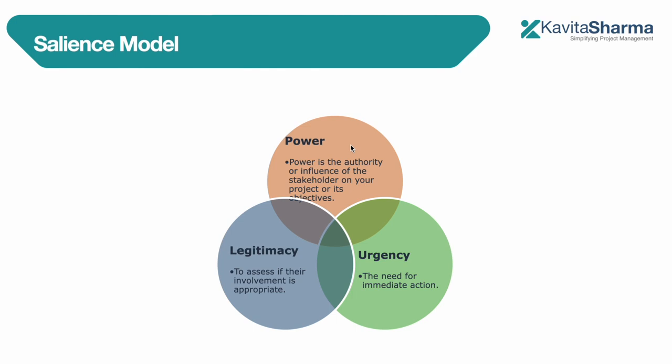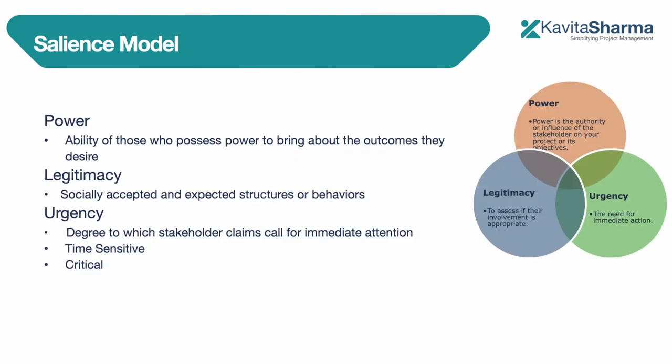Power is the ability to get work done through influence or virtue — you have the power to change the outcome of a project. Legitimacy is whether the involvement on the project is appropriate or within norms. Urgency refers to information needs or other needs that are time-sensitive — which stakeholder calls for immediate action.